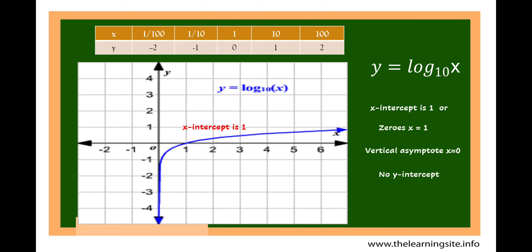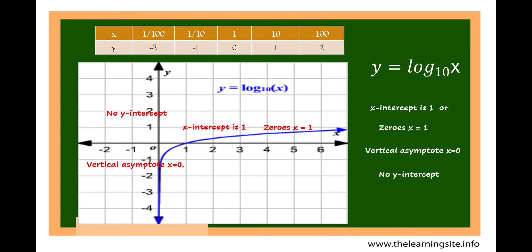The x-intercept is 1 because the graph intersects the Cartesian plane at x is equal to 1. So therefore, the zeros is also x is equal to 1. The vertical asymptote is x is equal to 0, and the graph is getting closer to x is equal to 0. There is no y-intercept because the graph did not intersect the y-axis.